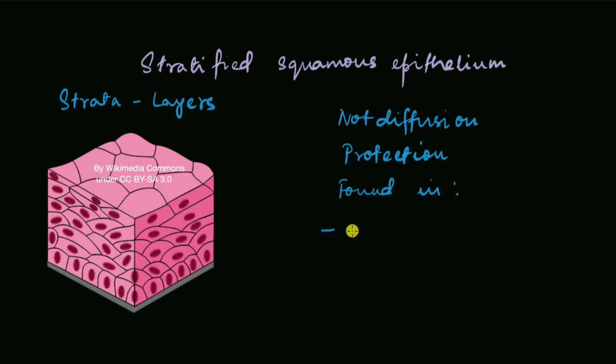So now can you guess where this kind of epithelium is found? It's found in the skin and also other areas such as the buccal cavity, that is the surface inside your mouth.